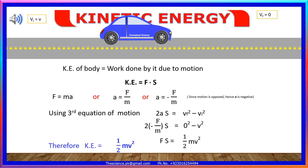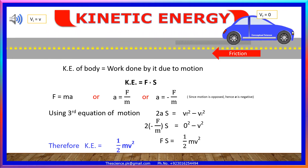Initial velocity is equal to v. The distance covered is s. And final velocity vf is equal to zero. Kinetic energy of the body is equal to work done by it due to motion: KE = F × s. Since F = ma, then a = F/m, and a = −F/m since motion is opposed, hence a is negative. Using the third equation of motion, 2as = vf² − vi². Substituting values: 2 × (−F/m) × s = 0² − v². Therefore, Fs = ½mv². The work done equals kinetic energy, therefore KE = ½mv².